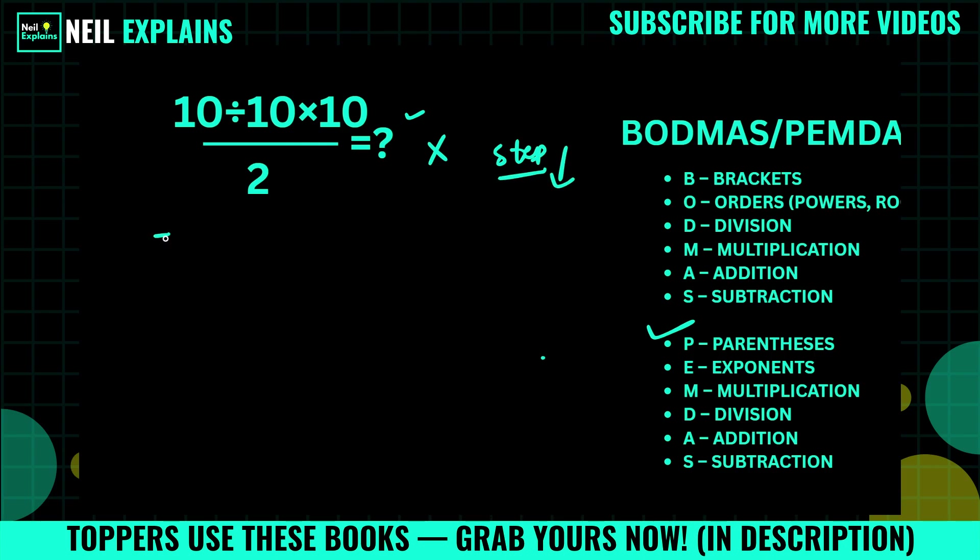We will solve first for the numerator part and we will write it down and divide it by 10 into 10. So here division and multiplication operations are there, and according to PEMDAS, if we consider it as the same level, divide and multiplication operations are taken as same level.